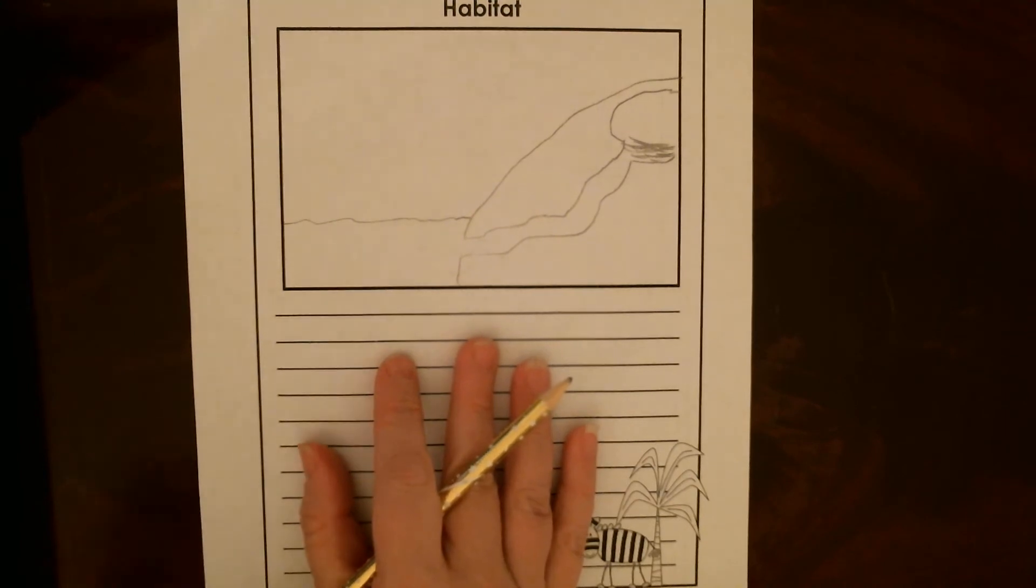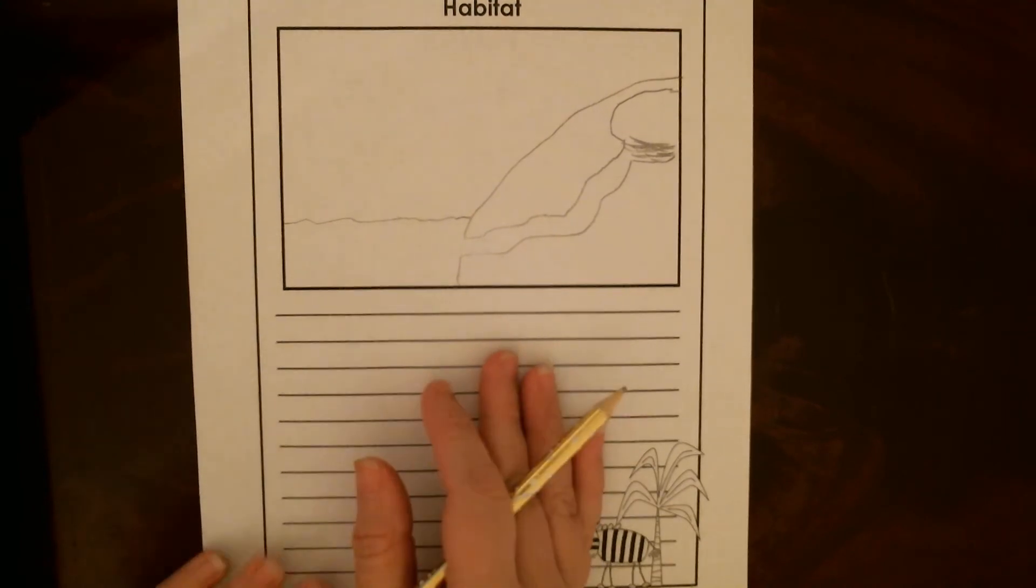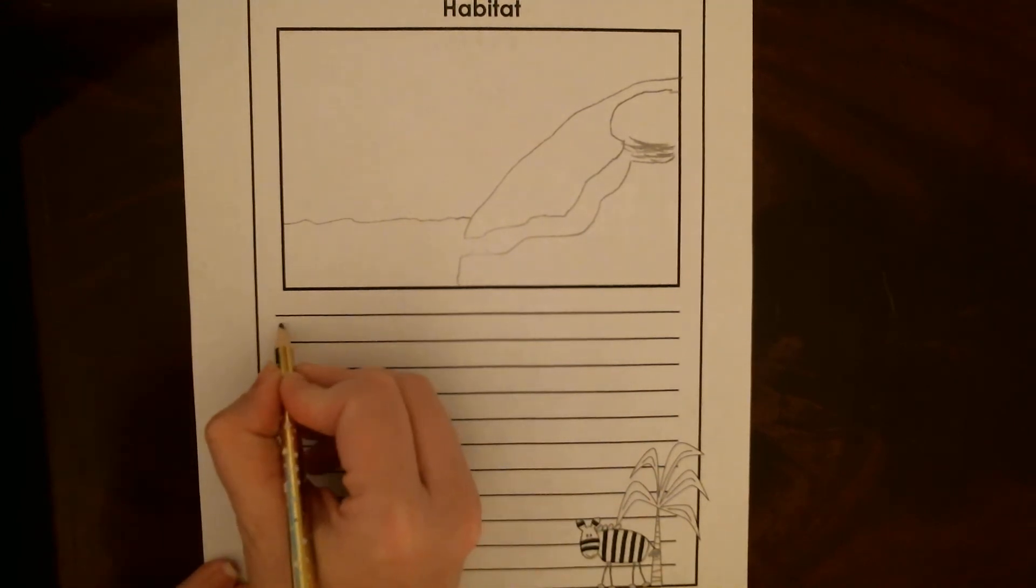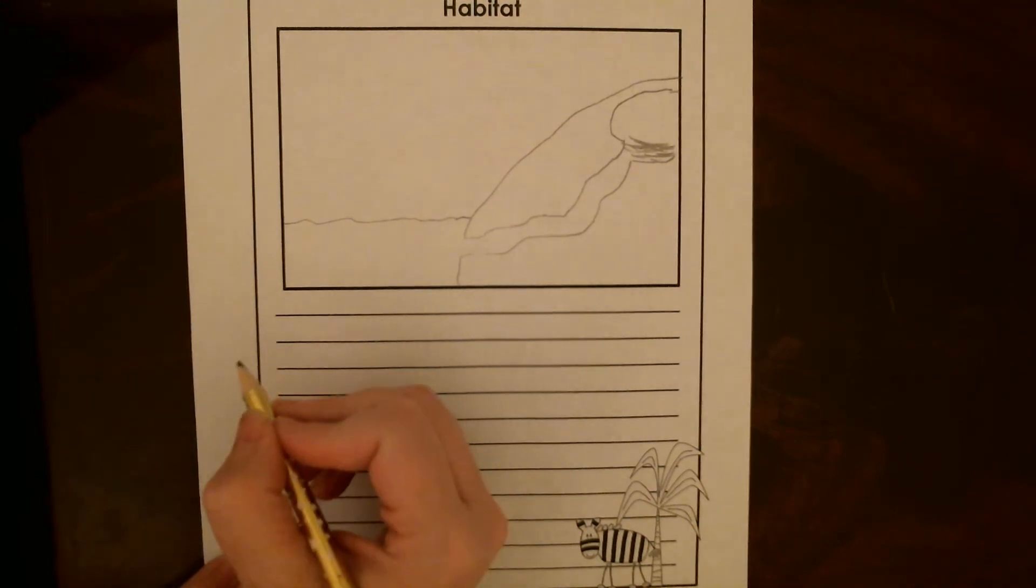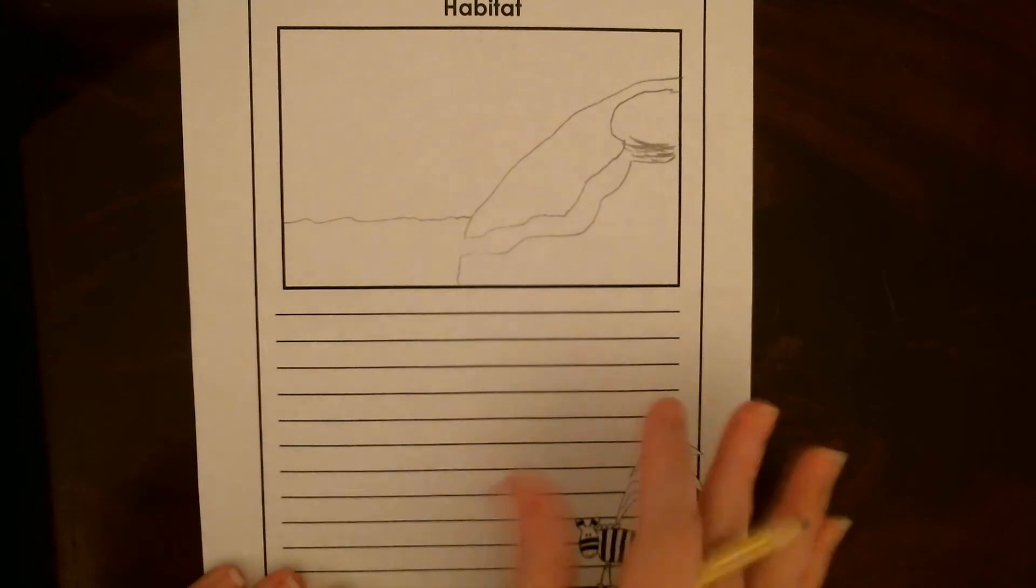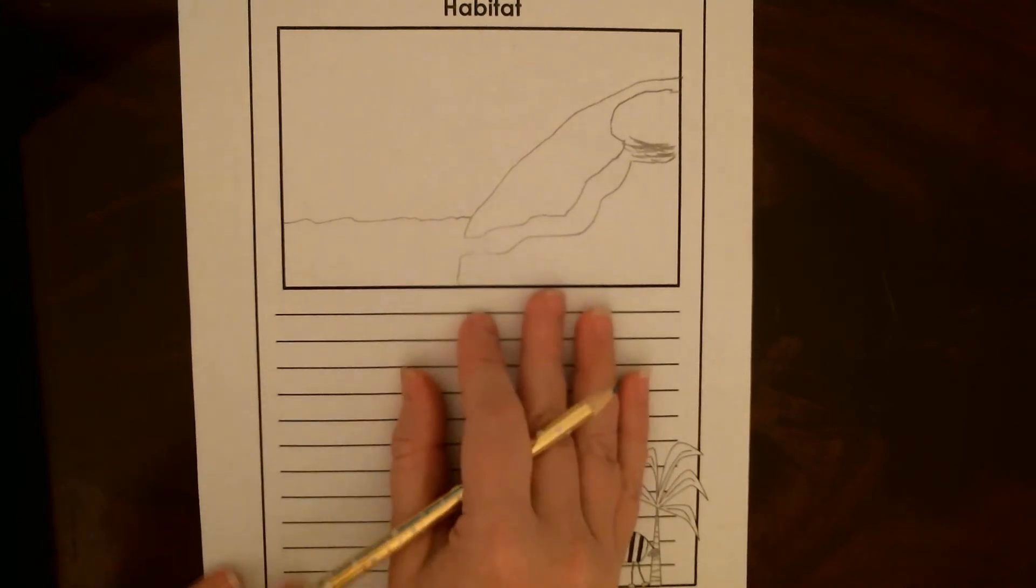All right, so I want to think about the big idea is where in the world do I find this animal. Okay, so we're going to start ours. I'm going to start with that, where in the world. So my animal specifically is found in Eastern Australia and Tasmania. So if you're not sure, look on a map and find out where in the world, what continents and everything your animal lives on.